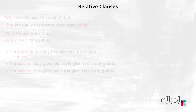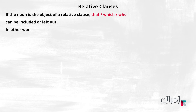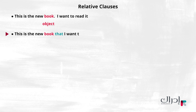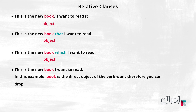If the noun is the object of a relative clause, 'that,' 'which,' and 'who' can be included or left out. In other words, you can drop 'that,' 'which,' and 'who' if the noun or information is describing the object of the sentence, but not when it is describing the subject. For example: 'This is the new book I want to read it.' 'This is the new book that I want to read.' 'This is the new book which I want to read.' 'This is the new book I want to read.' In this example, 'book' is the direct object of the verb 'want,' therefore you can drop the relative pronoun.